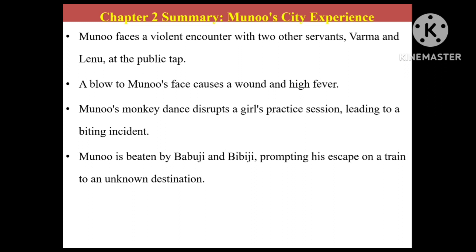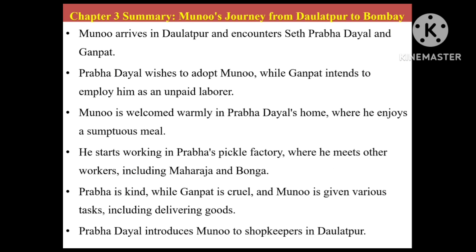Finally, Munnu was playing with the children of this accountant and he happens to bite the daughter of the accountant. When they see this, both of them beat Munnu very badly. Munnu was not able to tolerate this, so he escaped on a train. Now we will start today's class, that is from chapter 3.